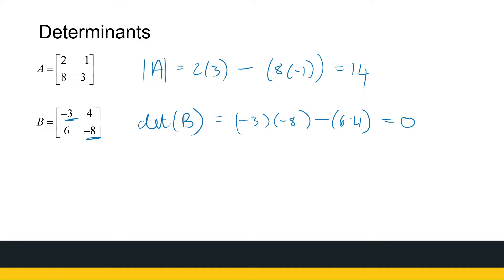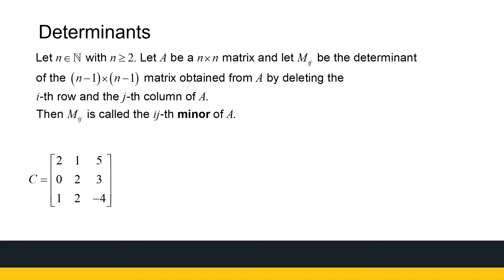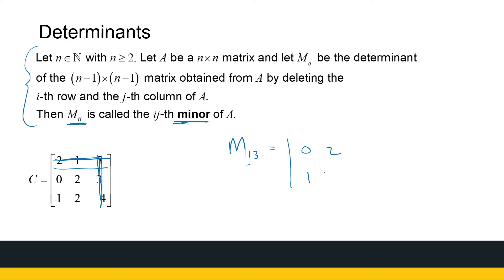Before we can explain how to find the determinant of a 3 by 3 matrix and bigger, we need to define two things. The first is what we call the minor of a matrix, denoted by capital M. For matrix C, if I want M_13 — row 1, column 3 — that means I find the determinant of the matrix left after eliminating row 1 and column 3. That leaves [0, 2; 1, 2], and its determinant is 0 times 2 minus 2 times 1, which is minus 2. So that's the 1,3 minor.